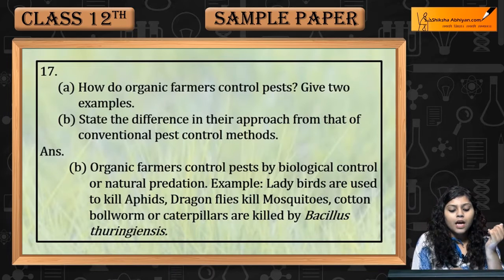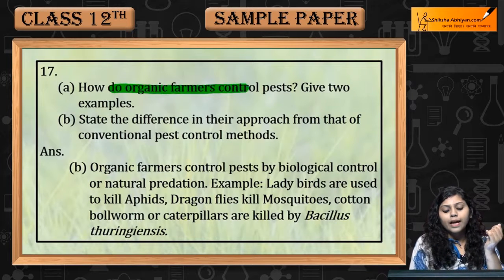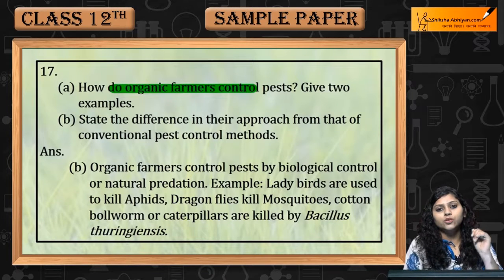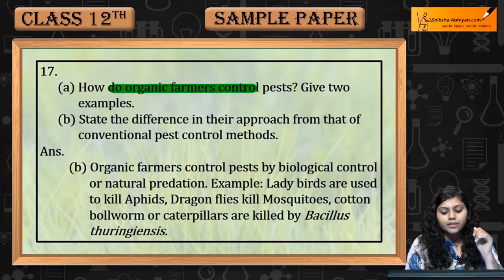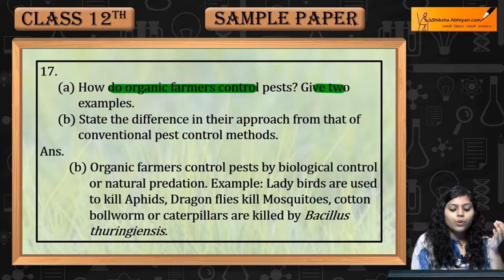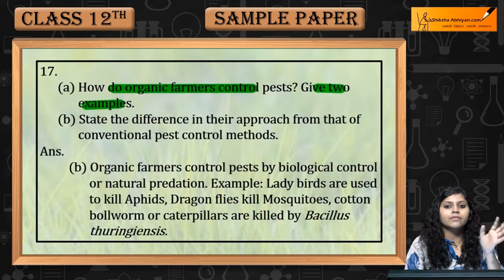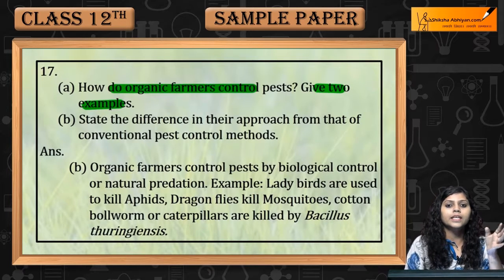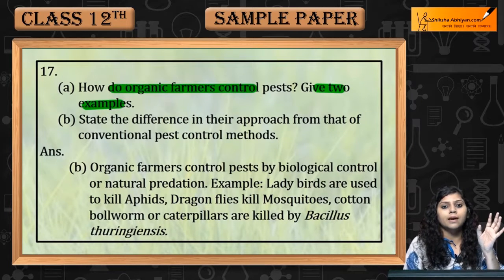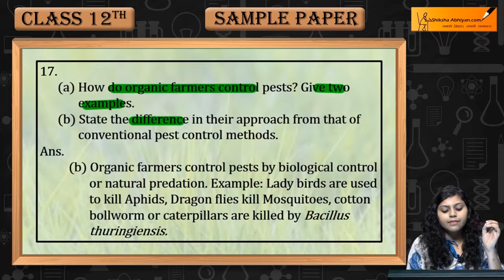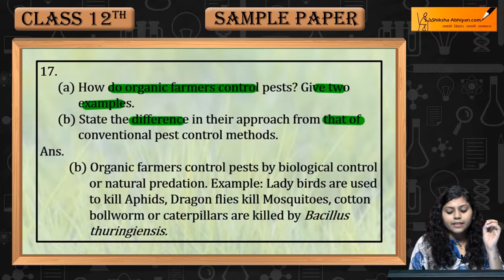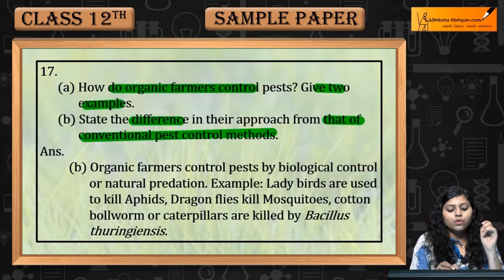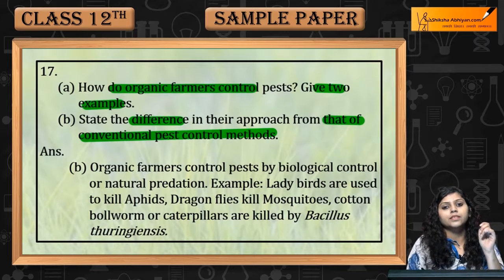Question No. 17: How do organic farmers control pests? Give two examples. Organic farmers kaise pest control karte hain aur iske example bataane hain. State the difference in their approach from that of conventional pest control methods — kaise different hai ye conventional pest control method ke?